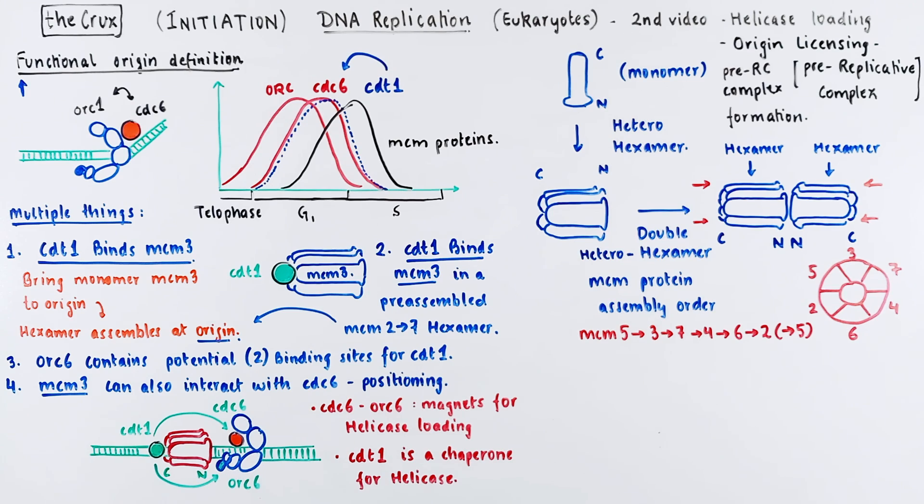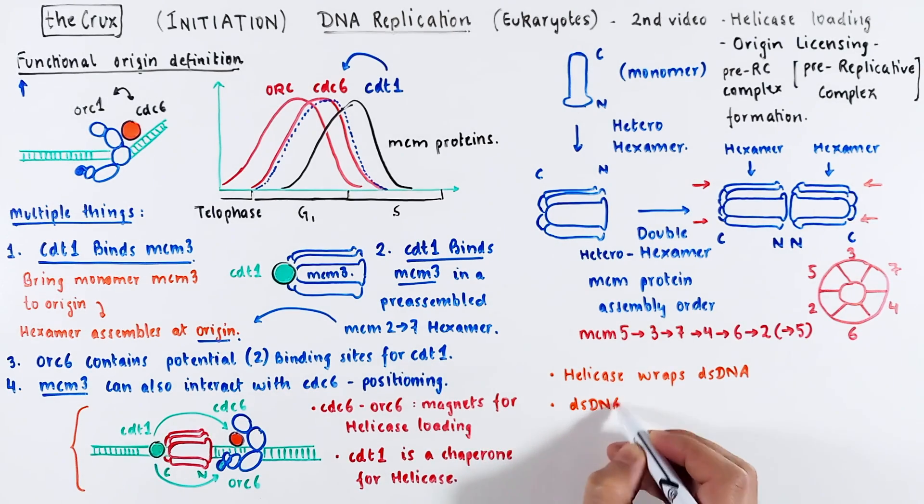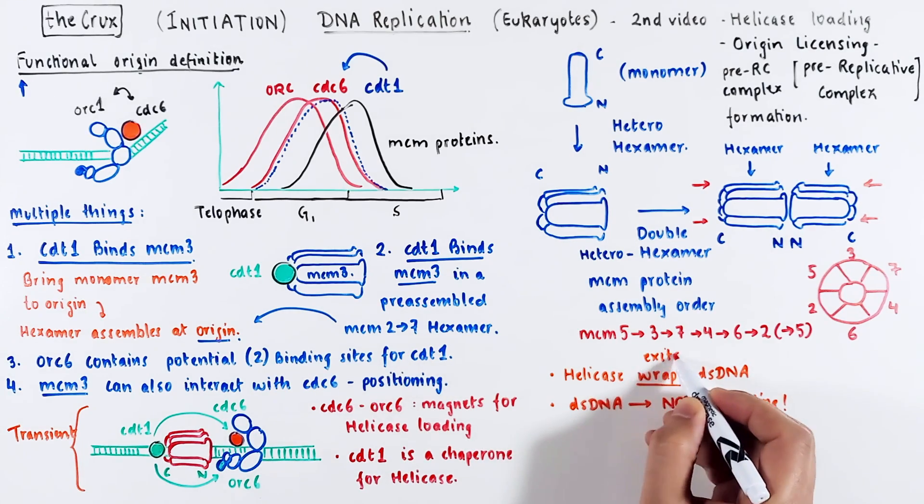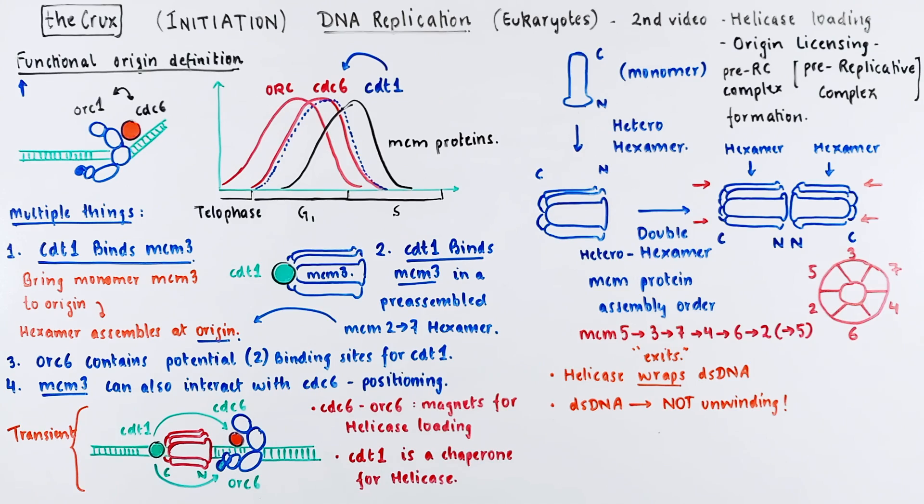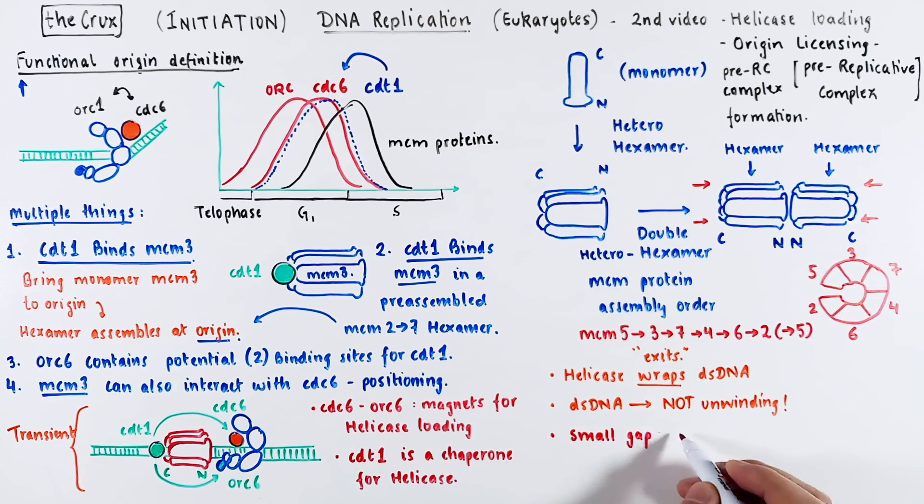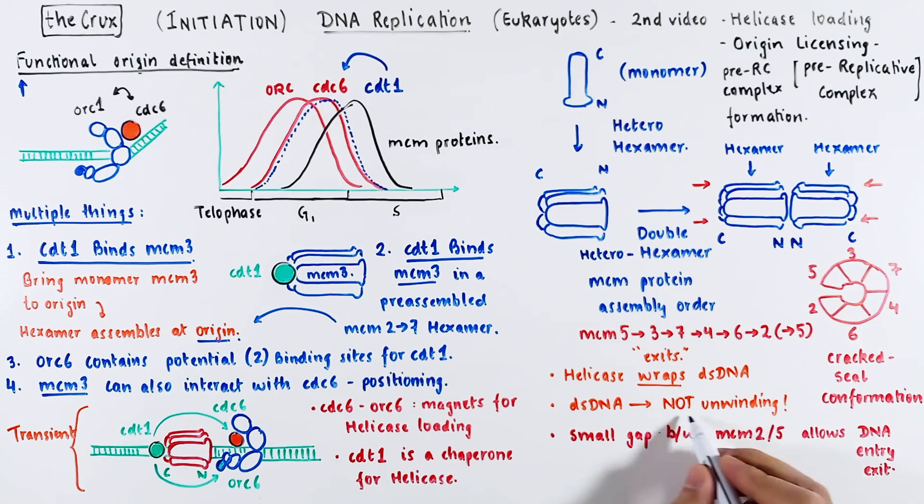There are some very key features of this complex that you should know. The helicase in this configuration has double-stranded DNA in its central channel, which means that the double-stranded DNA is not unbound just yet. And this state of the complex is very transient and dynamic, so the complex is free to dissociate and the wrapping of double-stranded DNA state can be exited. How this wrapping works is that the monomer MCM-5 and 2 actually don't close the hexamer. There is a small opening between MCM-5 and MCM-2, which allows DNA entry and exit. This conformation of the open hexamer is called a cracked seal conformation. And the fact that the helicase cannot unbind the DNA means that it is inactive at this stage.